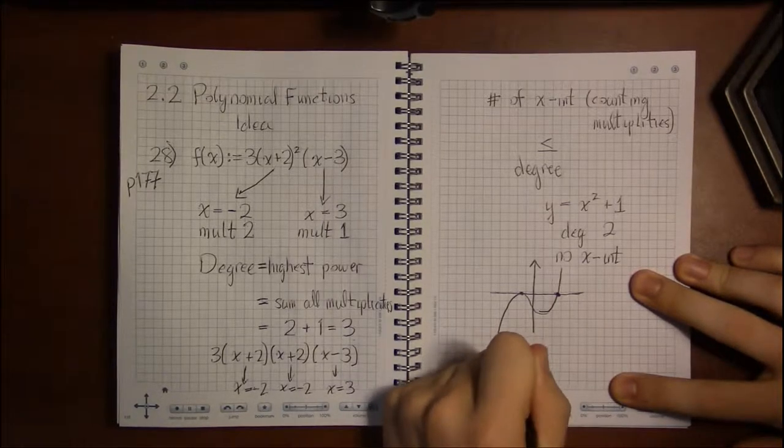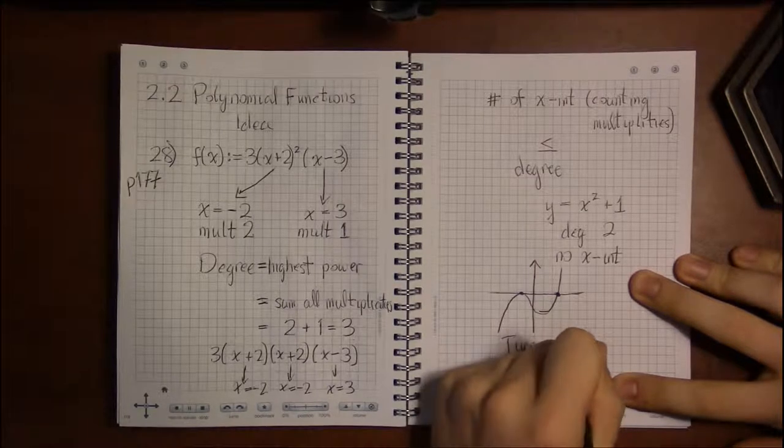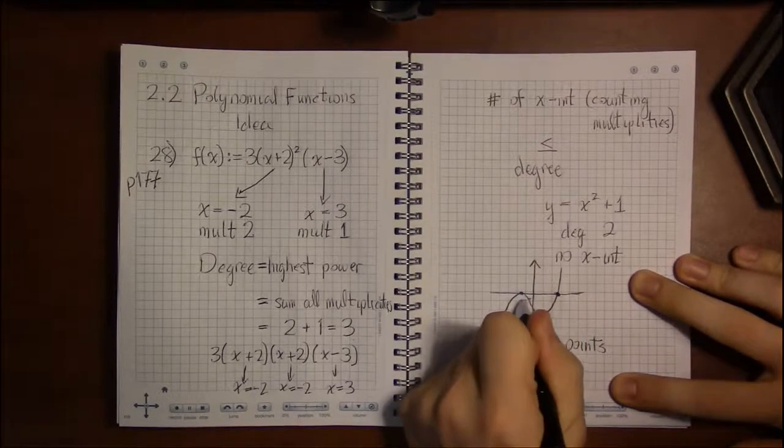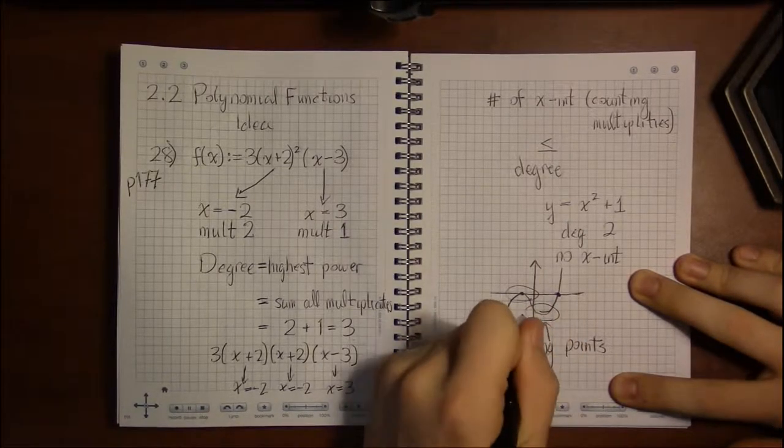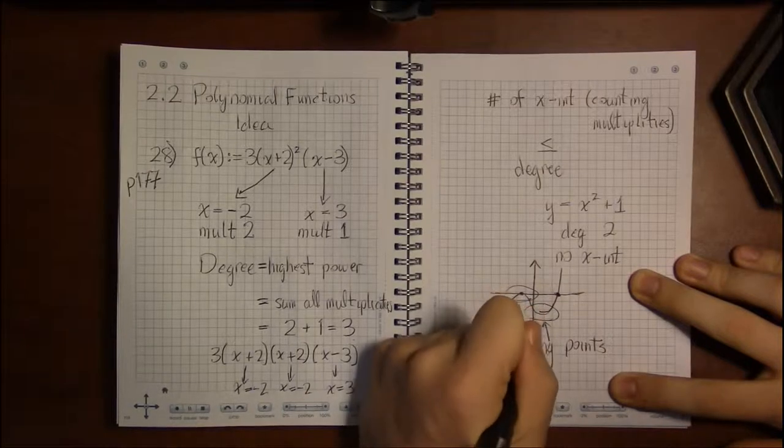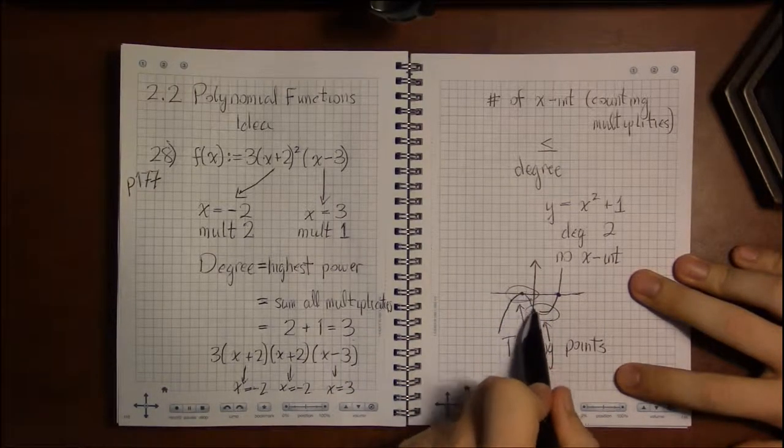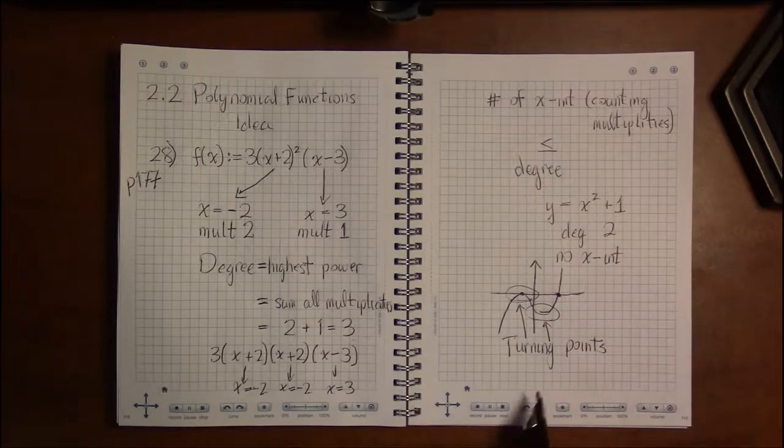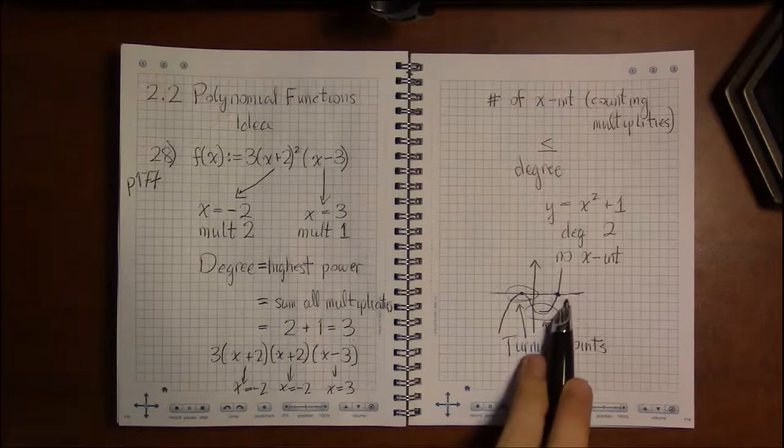Turning points are aptly named. They are points, or locations on the graph, where the graph goes from increasing to decreasing, from going up to going down, or going down to going up. So turning points are when the graph turns around and goes back in the opposite direction.